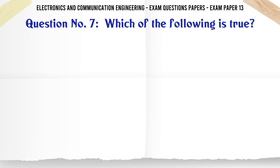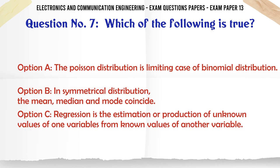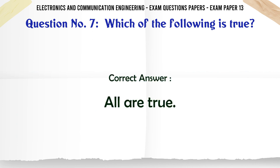Which of the following is true? A: The Poisson distribution is limiting case of binomial distribution, B: In symmetrical distribution the mean median and mode coincide, C: Regression is the estimation or production of unknown values of one variable from known values of another variable, D: All are true. The correct answer is all are true.